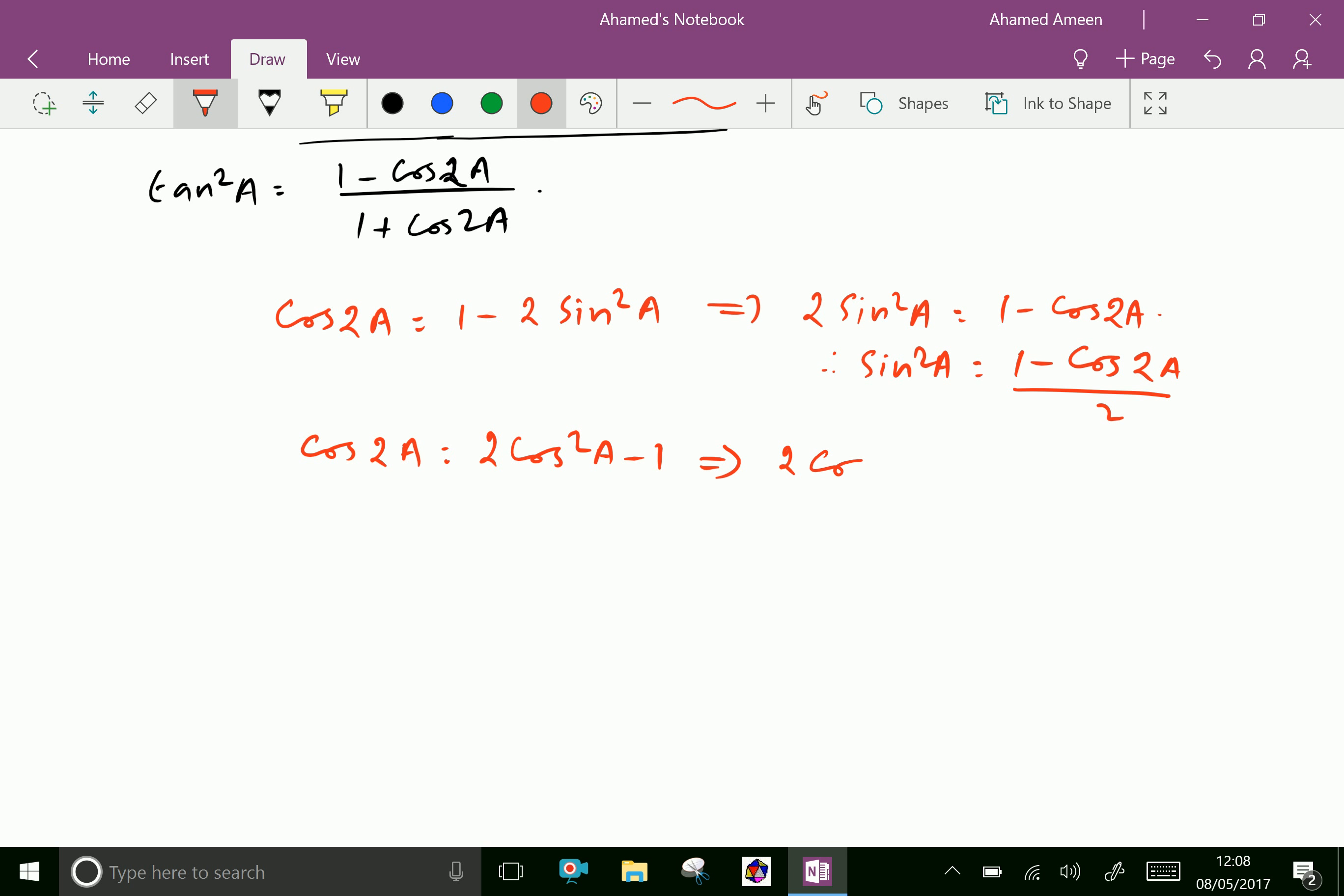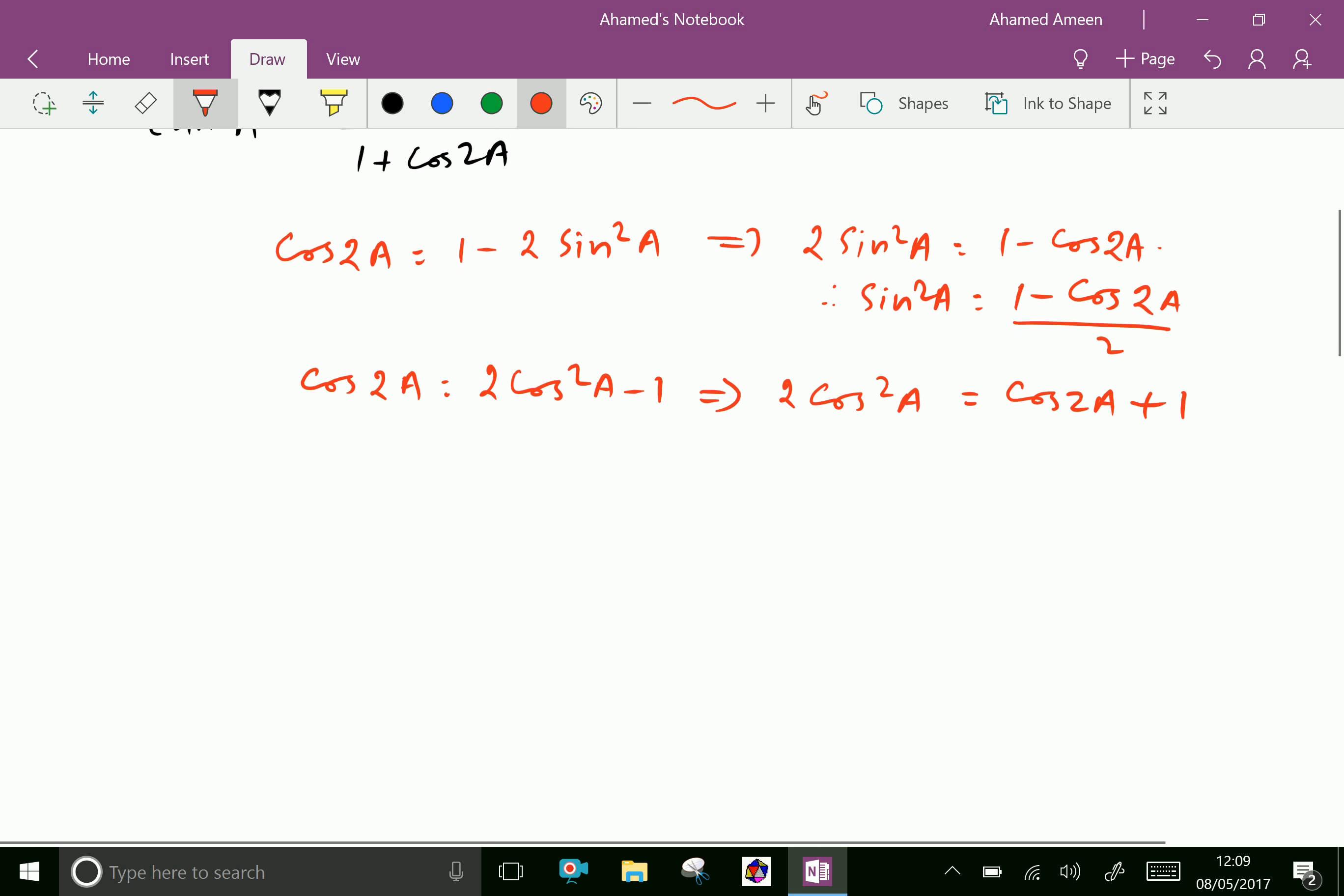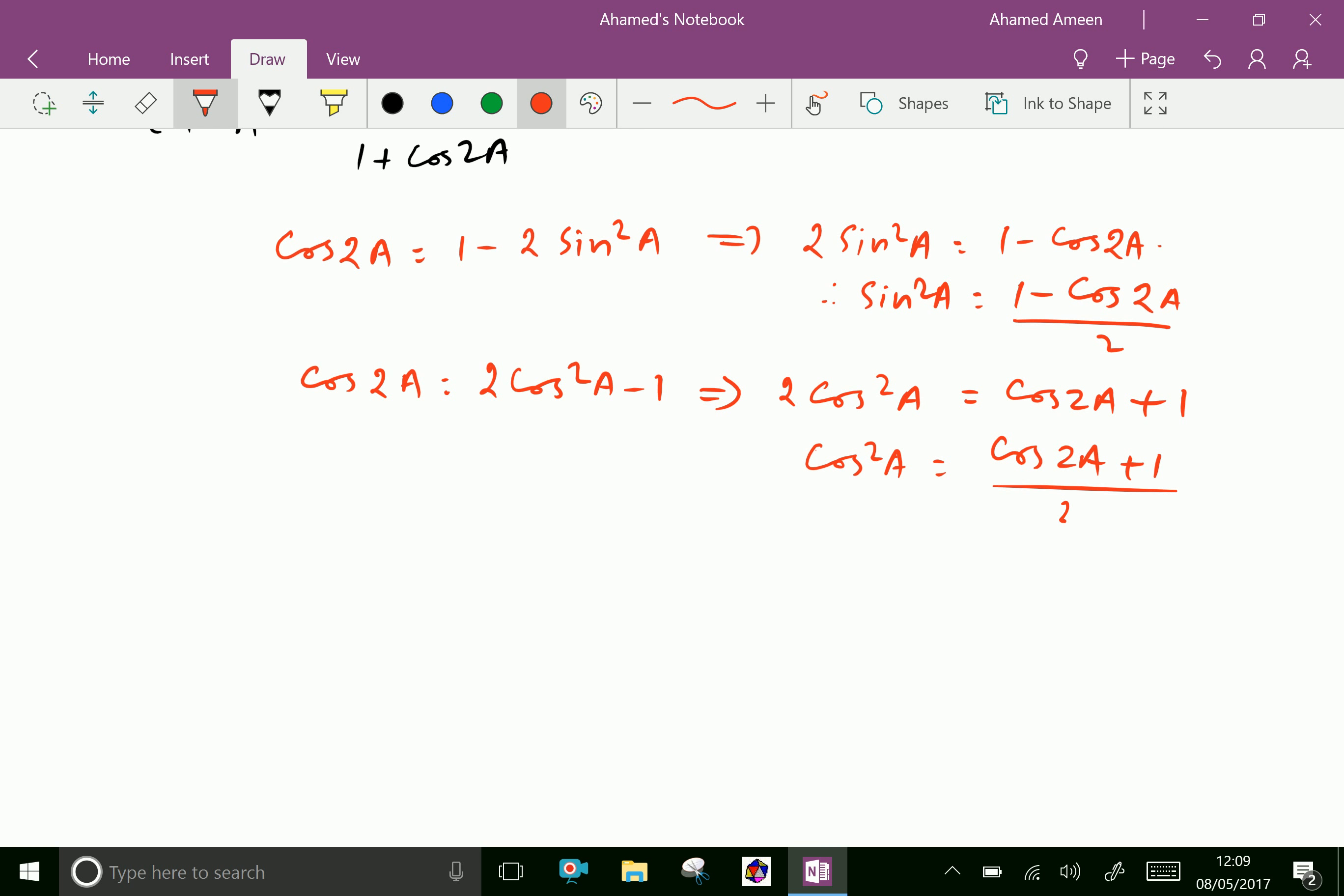2 cos squared A equals cos 2A plus 1, then cos squared A equals cos 2A plus 1 over 2.